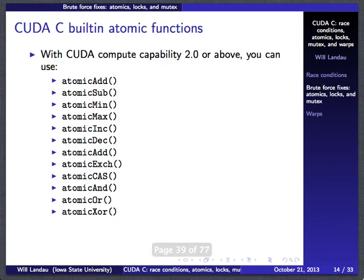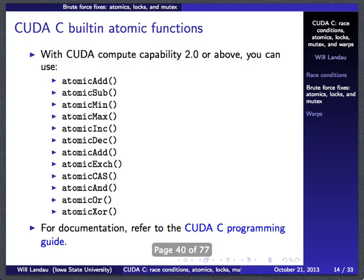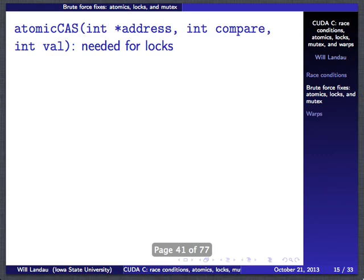There are a lot of atomic functions. Here are the ones available: add, subtract, min, max, increment, decrement — exactly what you'd think. Atomic exchange switches two values. And, or, and XOR (exclusive or) are the logical operators. You won't need that many because you won't be doing atomics very often. Atomic CAS — compare and swap — I will go over in detail because it's important to how locks are implemented.